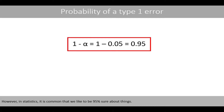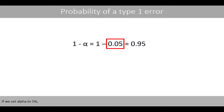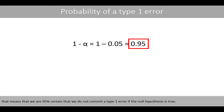However, in statistics, it is common that we like to be 95% sure about things. If we set alpha to 5%, that means that we are 95% certain that we do not commit a type 1 error if the null hypothesis is true.